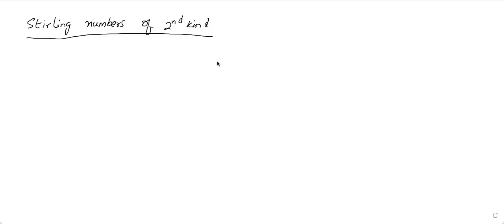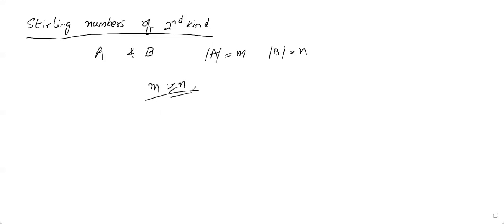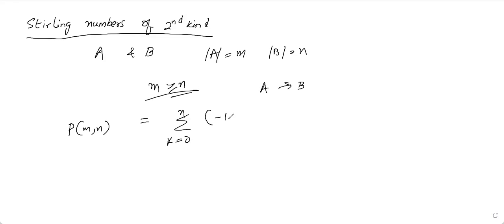Let us see this as the length number of second kind. If we consider set A with m elements and set B with n elements, where m is greater than or equal to n, then the number of onto functions from A to B is given by the formula P of m comma n, which is the summation from k equals zero to n minus one, raised to the power of k.